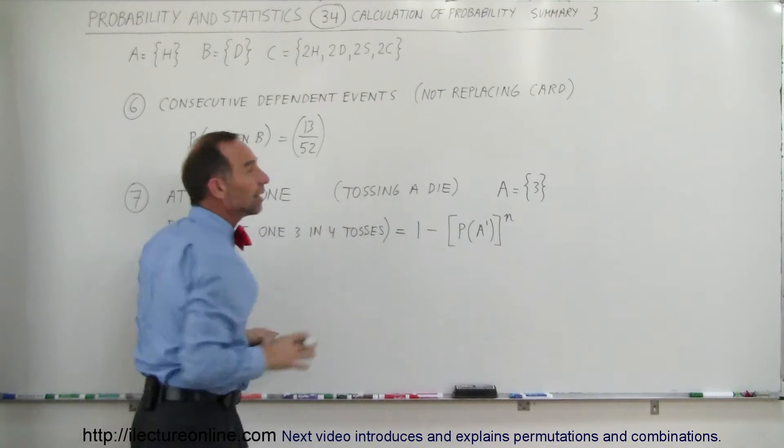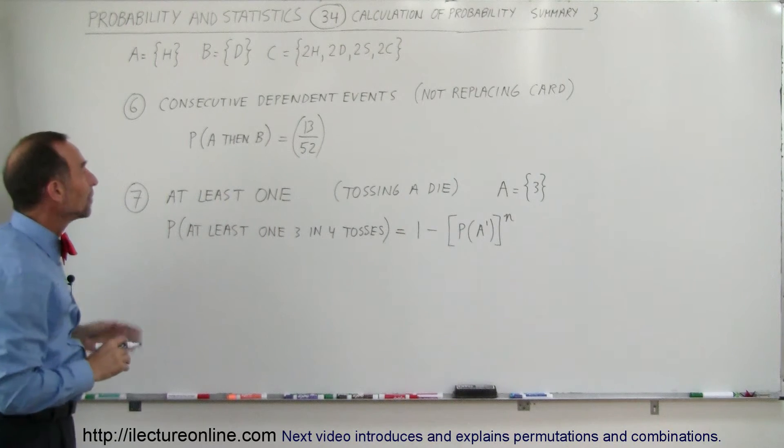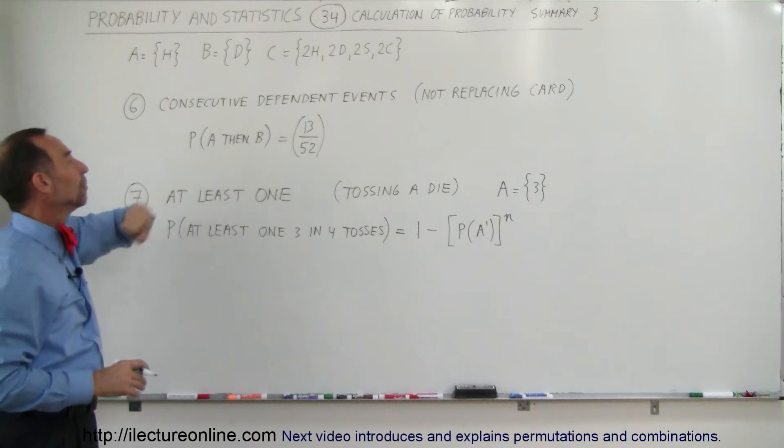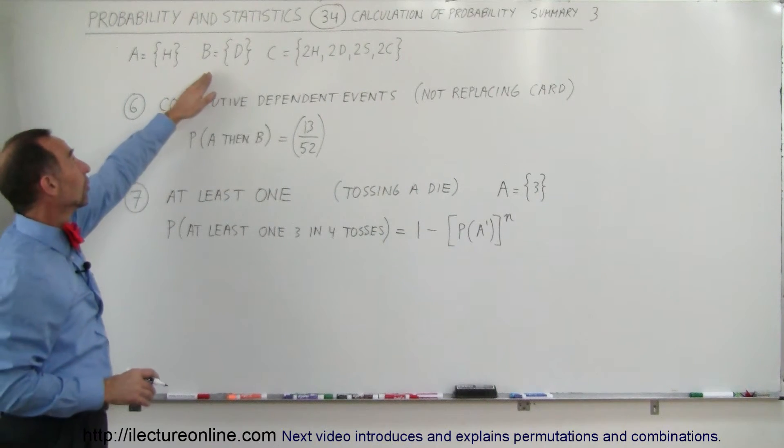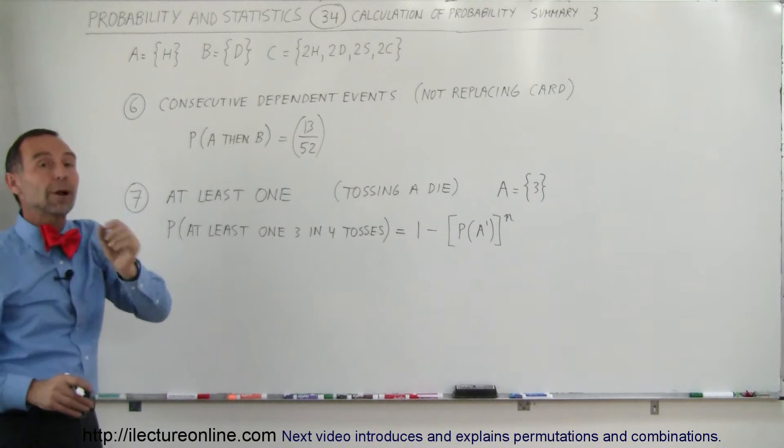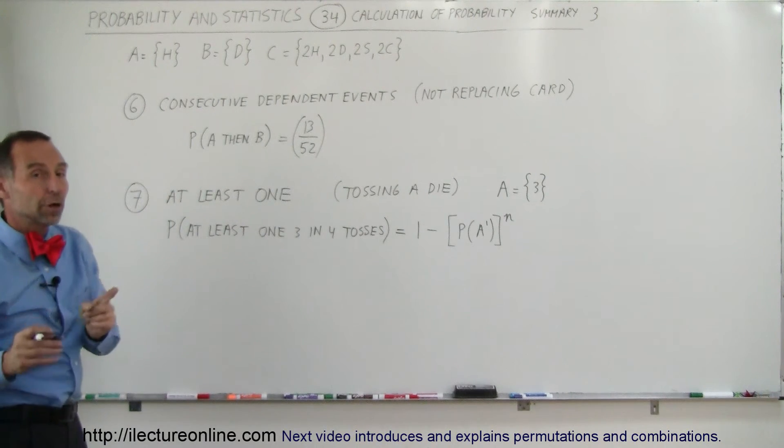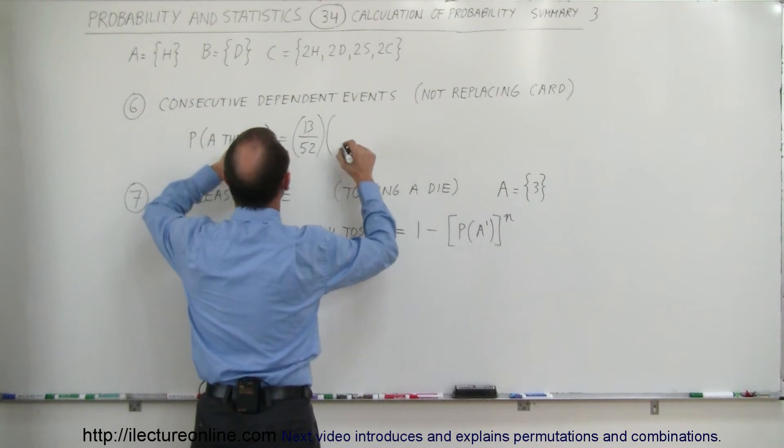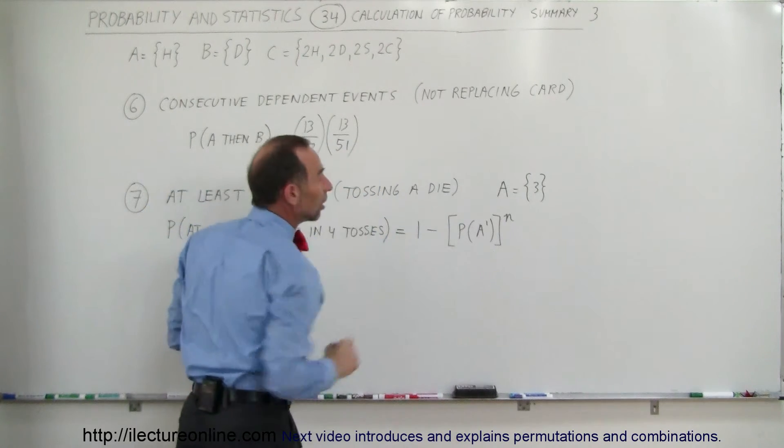Now we're going to not put the card back and now we're going to pull another card. What's the probability of B occurring? Well, if we pull the heart, then there's still 13 diamonds in there. So the probability of diamonds is the number of diamonds that are there divided by the total number of cards, which is now one less. Therefore, the probability of pulling a diamond next would be 13 divided by, now there's only 51 cards.